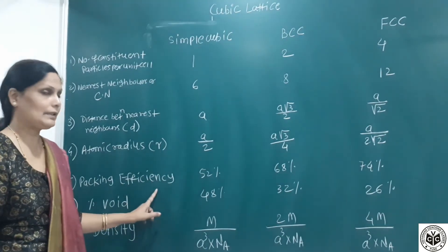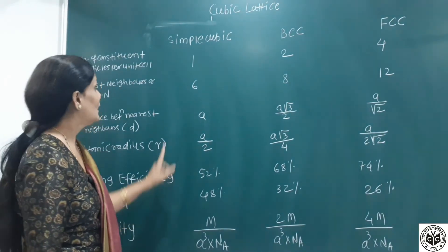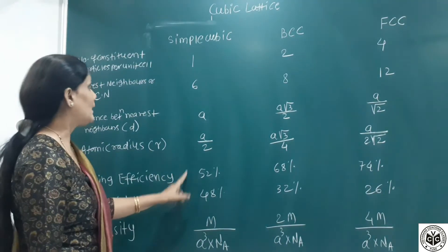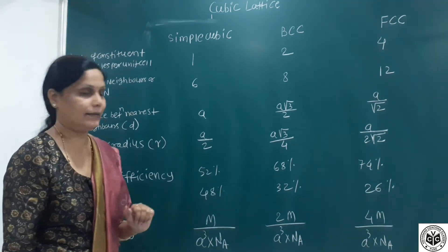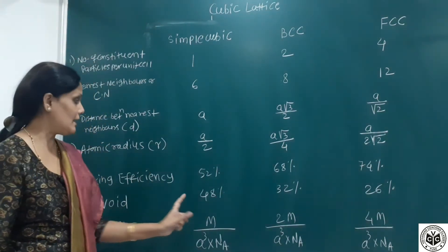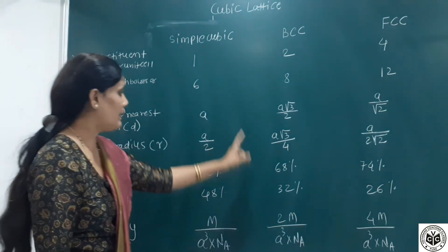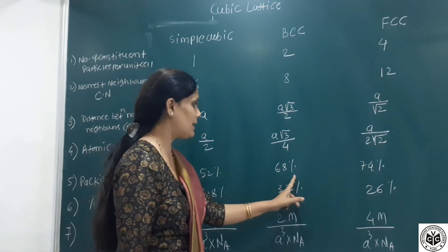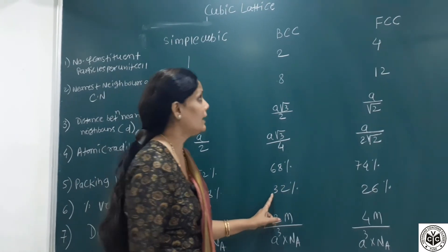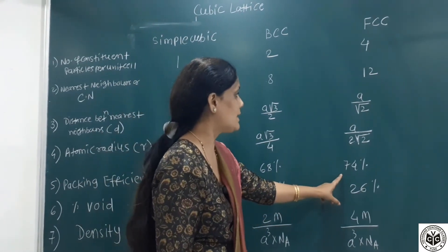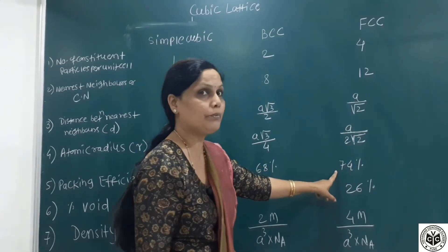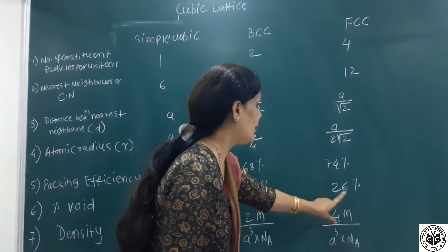Packing efficiency is an MCQ equation. For simple cubic, packing efficiency is 52%, meaning void empty space is 48%. For BCC, packing efficiency is 68%, void is 32%. Highest packing efficiency is FCC at 74%, so void is 26%.